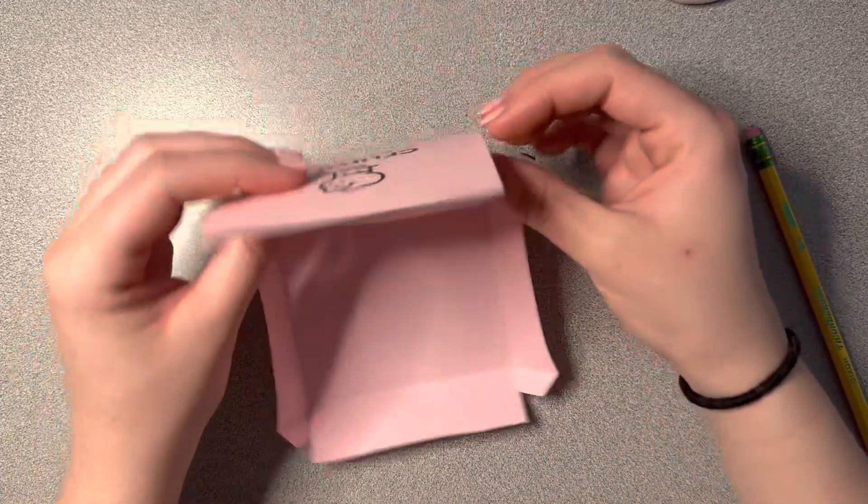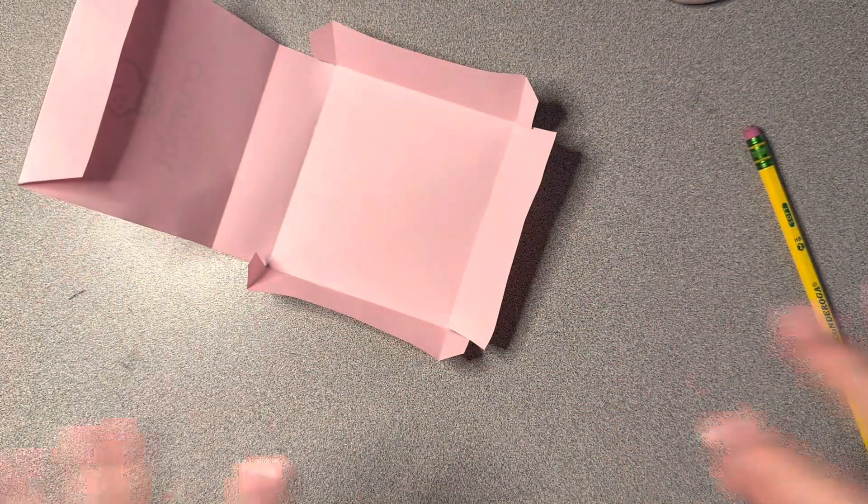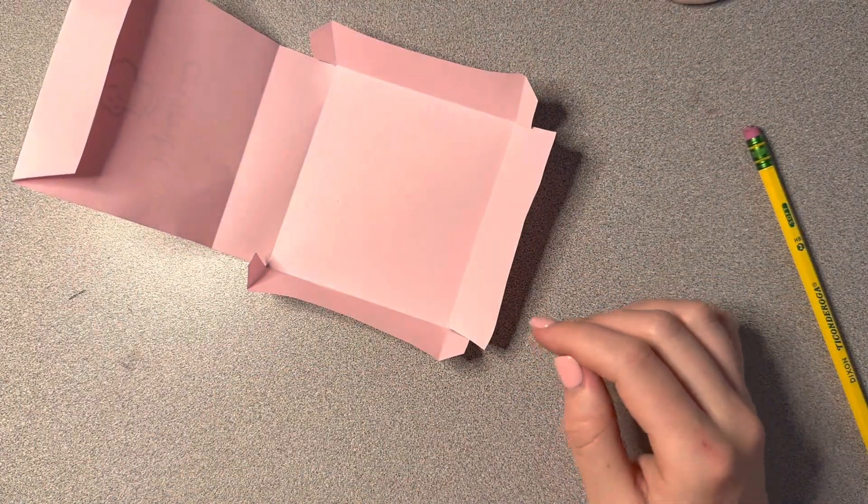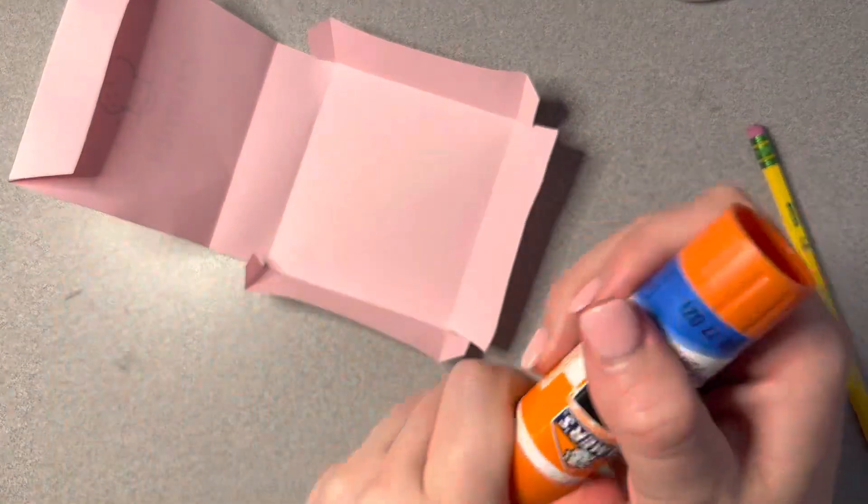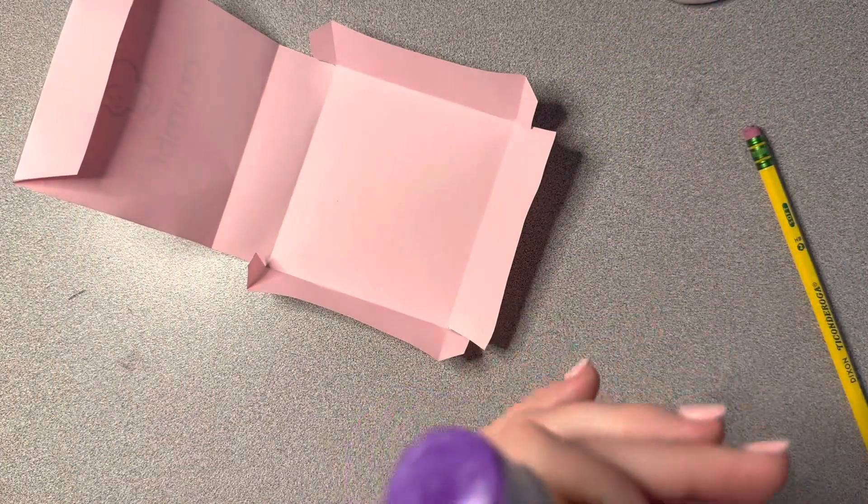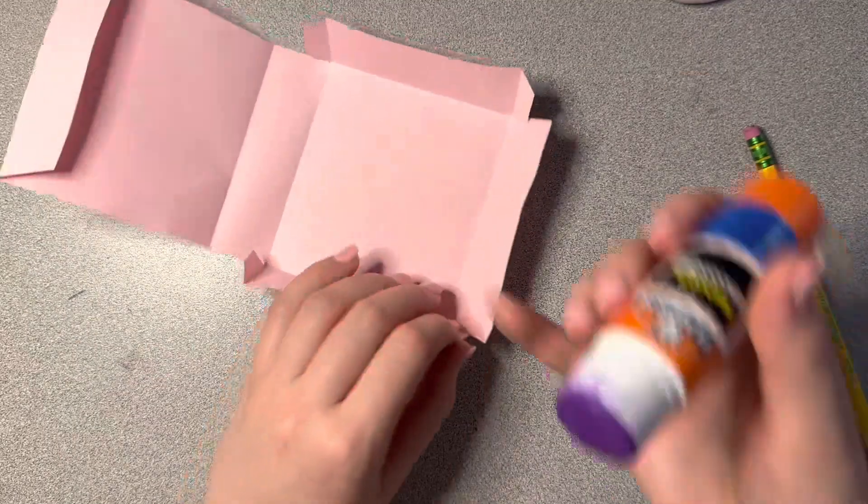Okay, so now you have your box. Now you just have to glue it together. So do not use a glue bottle for this. Use a glue stick. It dries faster, and it will hold a lot better.